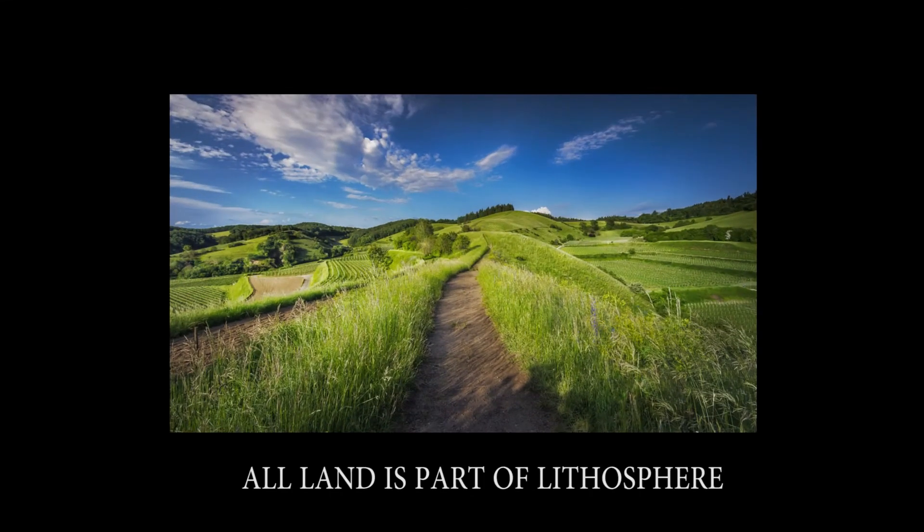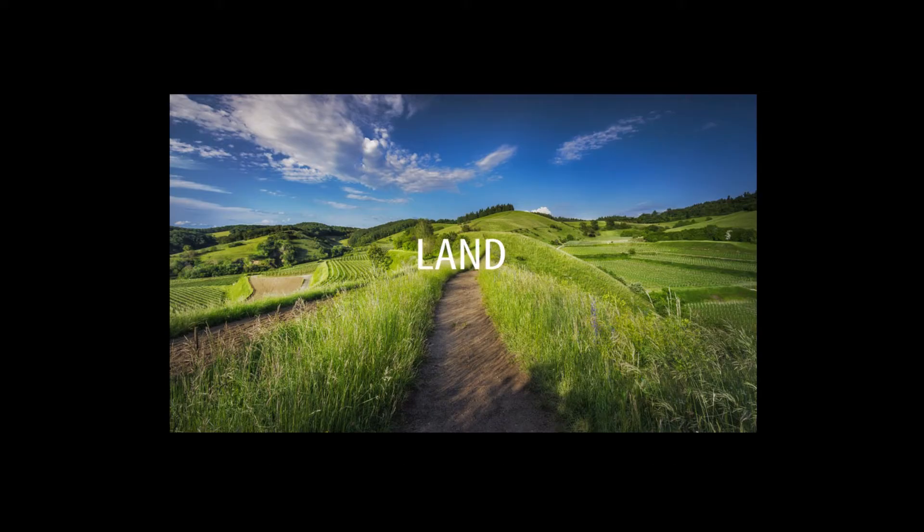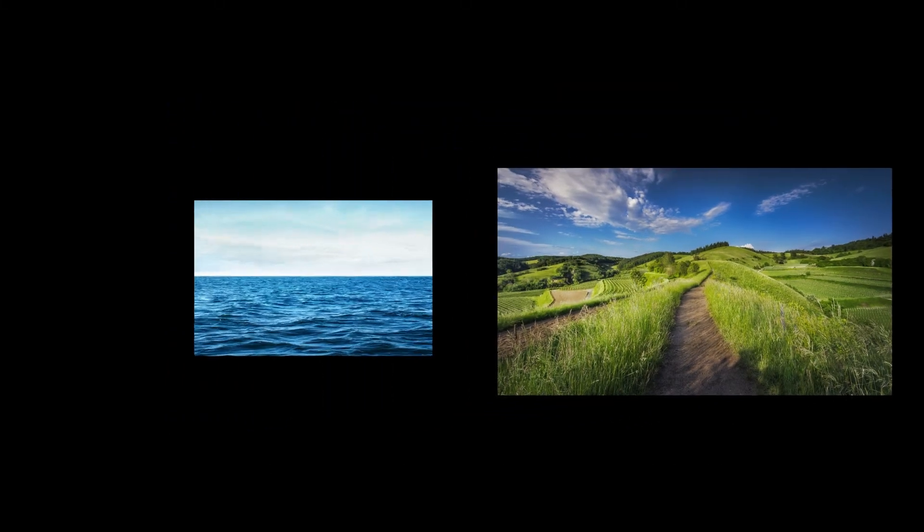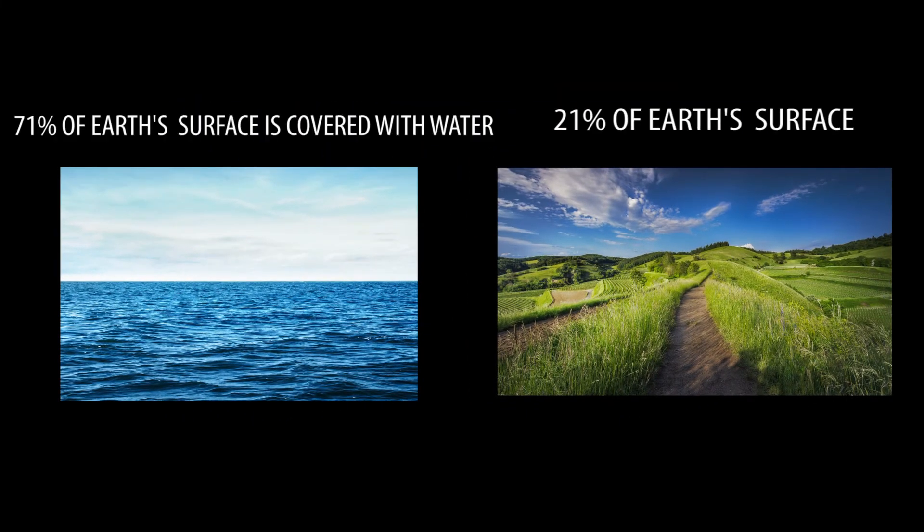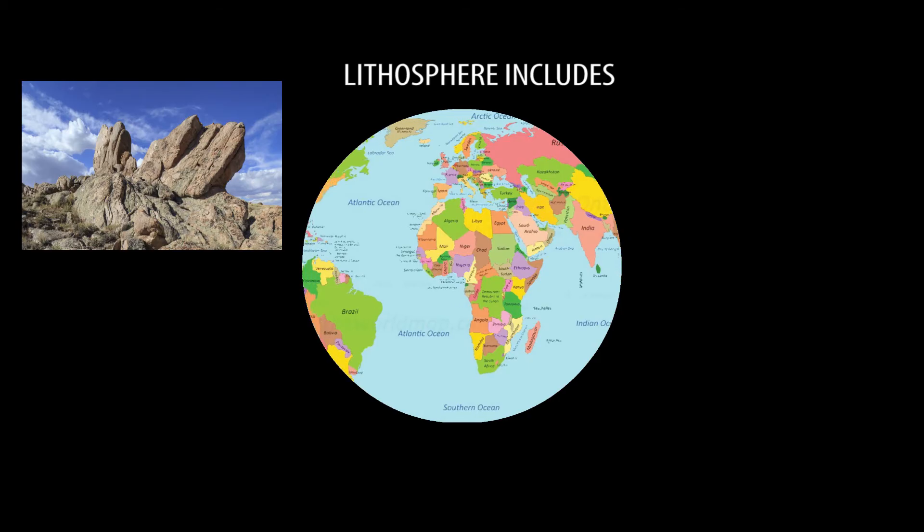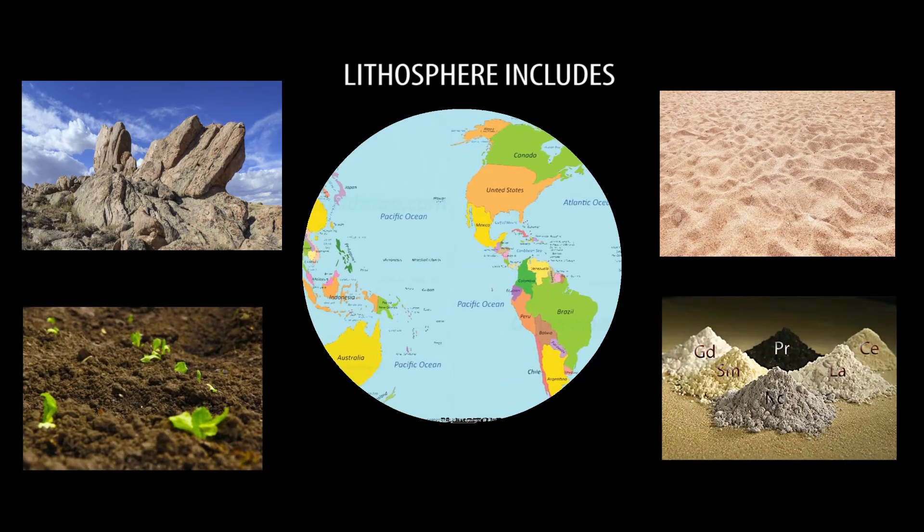Litho word means stone or rock. All the land is part of lithosphere. Lithosphere is also called land which is around 21% of Earth's total surface area. Lithosphere includes rocks, soil, sand, minerals, etc.